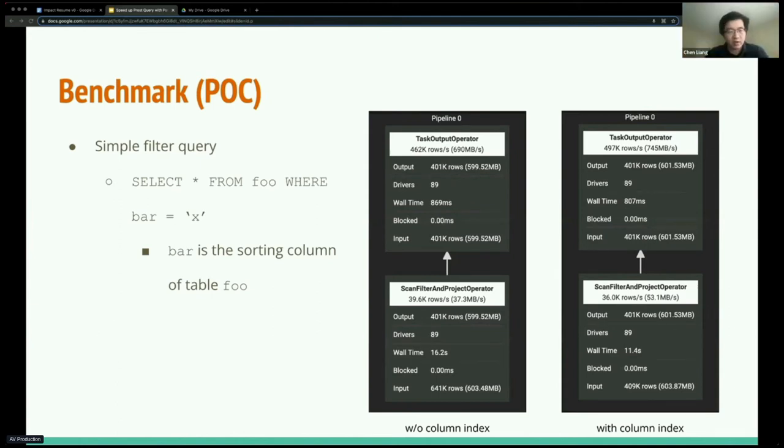Thanks Xinli for the introduction. Now let's turn to some benchmark results. This is an early stage POC-ish test with relatively simple queries and a small cluster. What I'm showing is a simple filter query I run in the form of select star from table where bar selects.